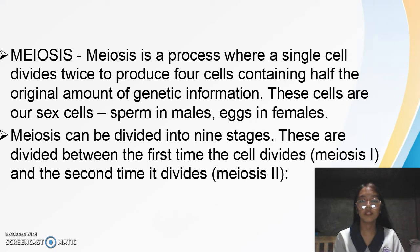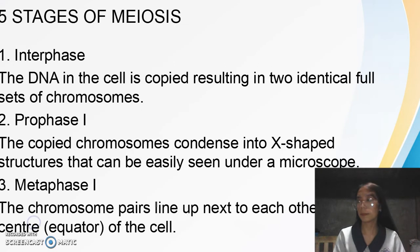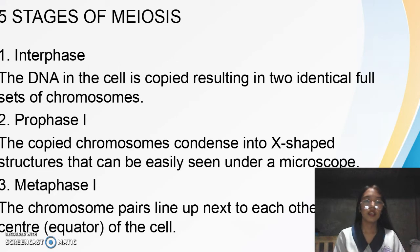Meiosis can be divided into nine stages, divided between the first time the cell divides (meiosis 1) and the second time it divides (meiosis 2). The stages of meiosis begin with Interphase, during which the DNA in the cell is copied, resulting in two identical full sets of chromosomes.